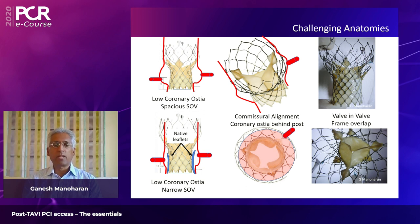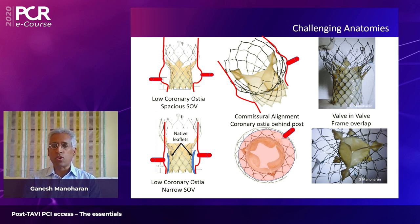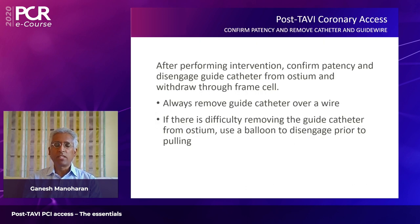There are areas where coronary access can be challenging. Three different scenarios: first, low coronary ostia; second, the frame or commissure sitting right in front of the coronary artery; and third, a valve-in-valve scenario where there is a lot of frame to go through and commissures may also be sitting in front of the coronary ostia. Remember, before taking the wire out, disengage the guide first, otherwise you could be in trouble.